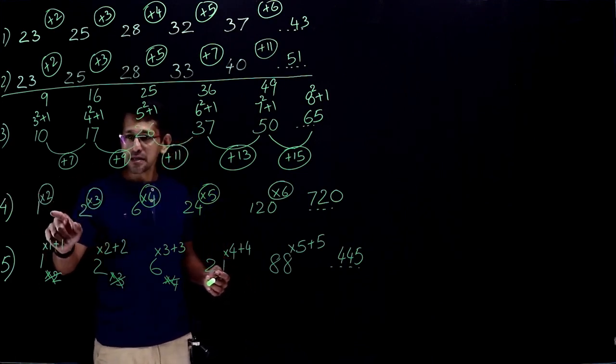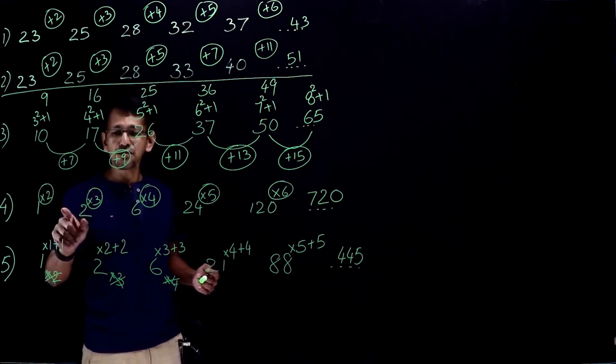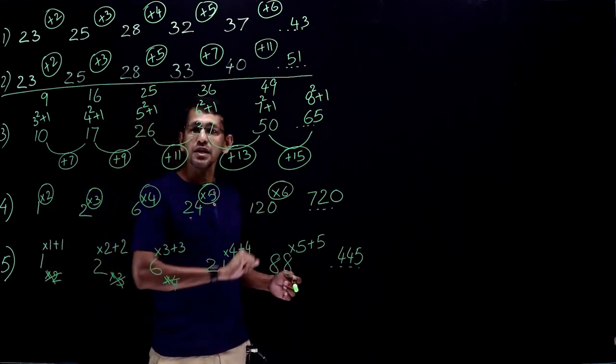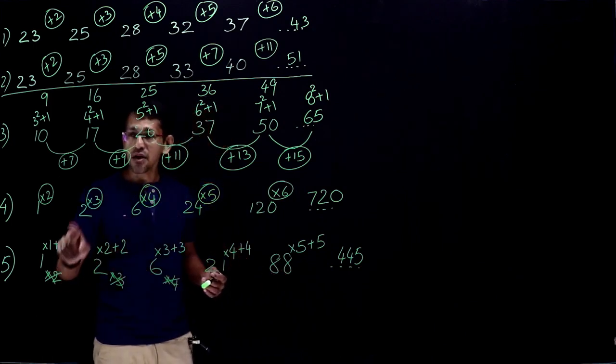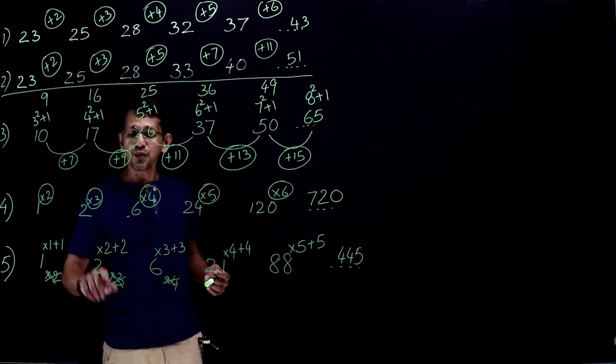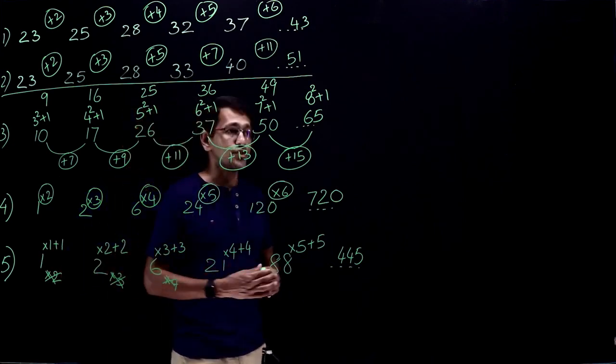And this one, question number 4, what's the pattern? Multiplication with the natural numbers into 2, into 3, into 4, into 5, into 6. This case, it is not just multiplication, it's multiplication and addition. Into 1 plus 1, into 2 plus 2, into 3 plus 3, etc.